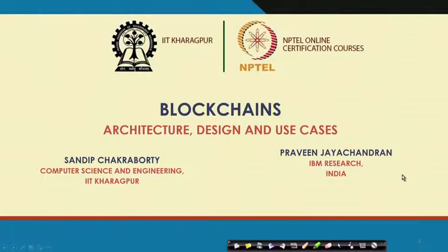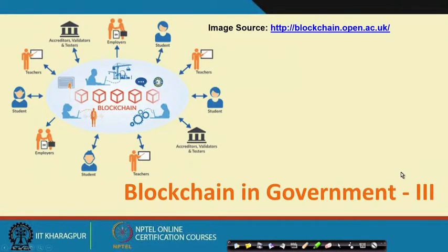We will primarily look into three different aspects: the first one is using Blockchain for digital identity, the second one is using Blockchain for taxation, and the third one is using Blockchain for land registry record management. Let us start with our discussion on Blockchain usage in government, where we will look at how Blockchain technology can be utilized for digital identity management.